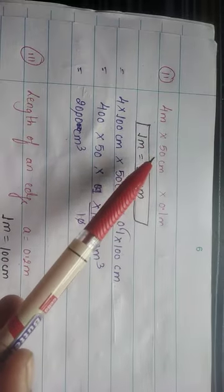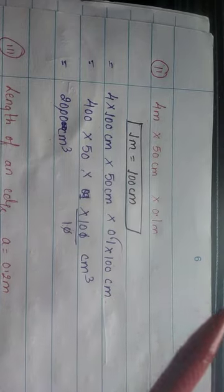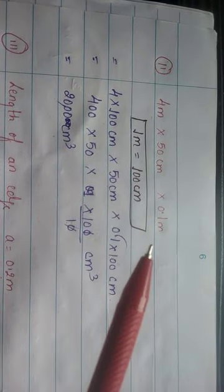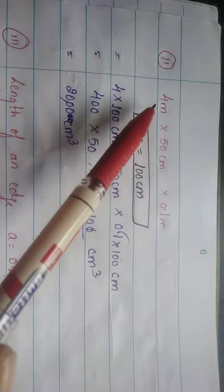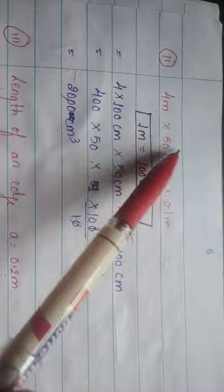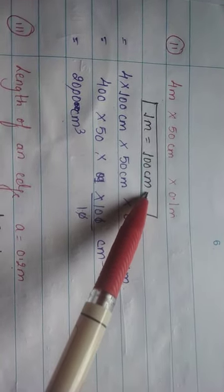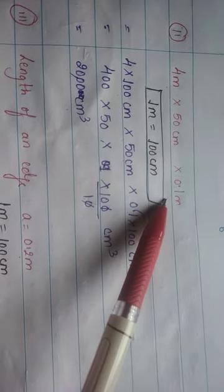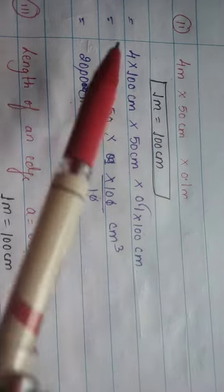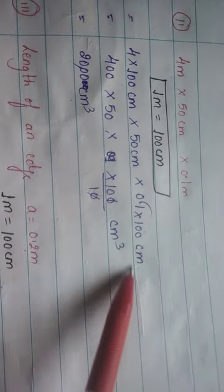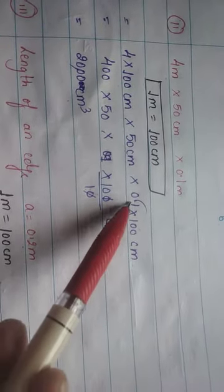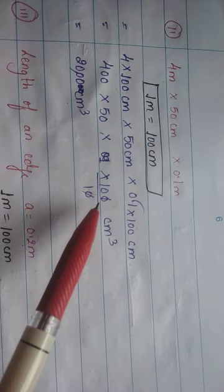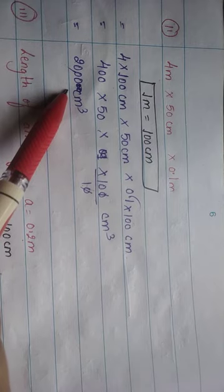The second part is 4 m × 50 cm × 0.1 m. We need the answer in centimeters, so we convert meters to centimeters by multiplying by 100. So 4 m = 400 cm, 50 cm stays as 50 cm, and 0.1 m = 10 cm. Volume = 400 × 50 × 10 ÷ 10. The answer is 2000 cm³.